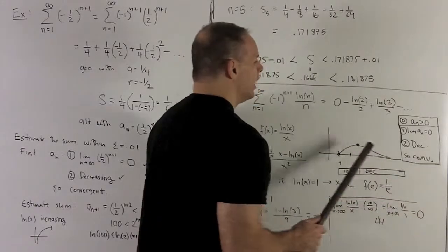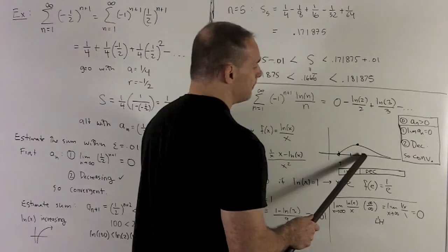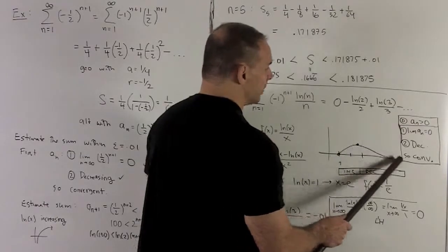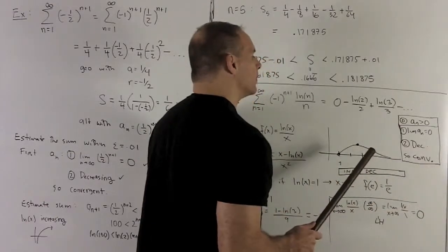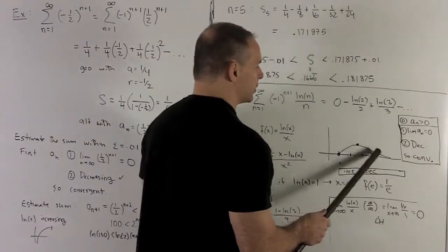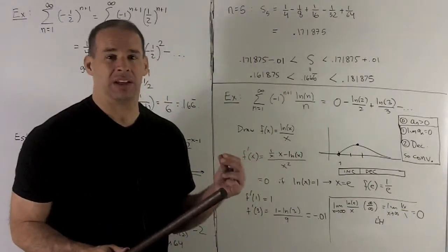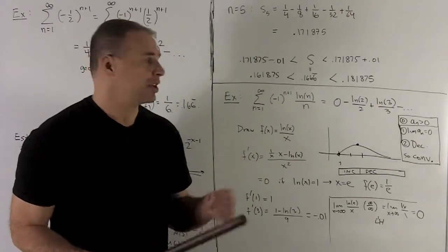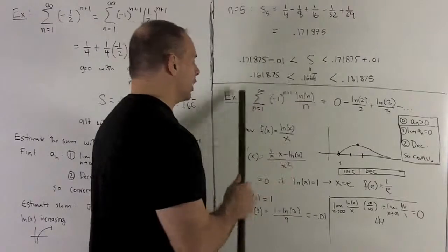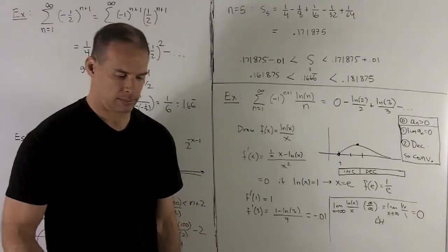And we also see, once I get past, say, 3, my graph is going to be decreasing all the way out. So, that's going to mean that my sequence is also decreasing once I get past 3. So, I have the two conditions that I need for the alternating series test. So, that means this alternating series is going to converge.